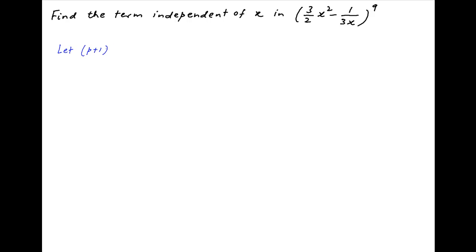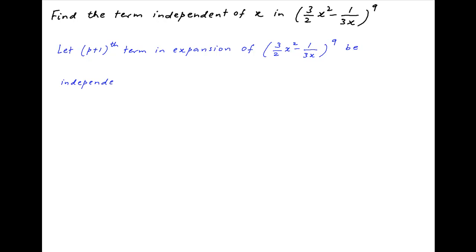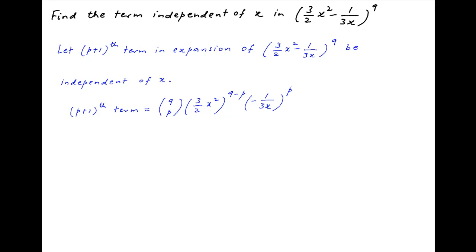Let's assume that the (p+1)th term in the binomial expansion of (3x² / 2 − 1 / 3x) raised to the power n is independent of x. The (p+1)th term is equal to 9 choose p multiplied by (3x² / 2) raised to the power (9 − p), multiplied by (−1 / 3x) raised to the power p.